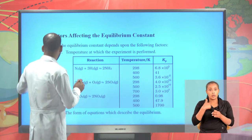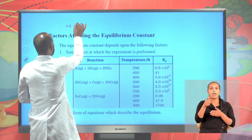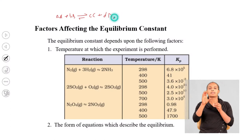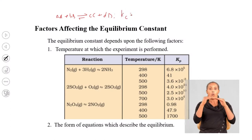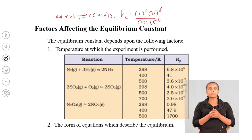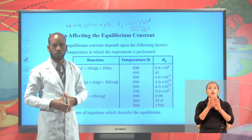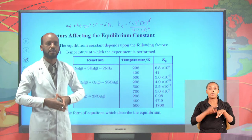A plus B to form C plus D. The equilibrium constant KC equals concentration of C to the power of c times concentration of D raised to d, divided by concentration of A to the power of a times concentration of B raised to b. KC is the ratio of concentration of products to that of reactants raised to their respective coefficients.